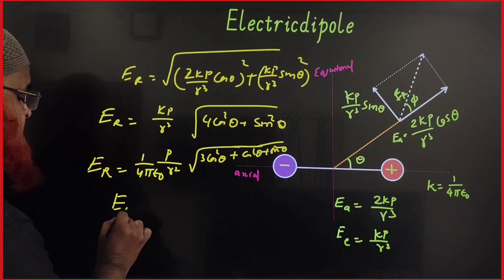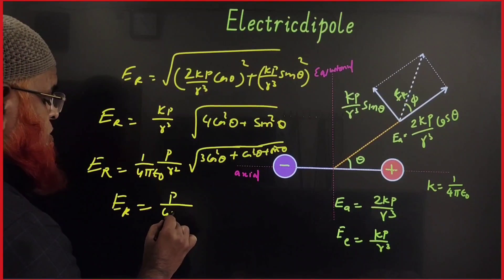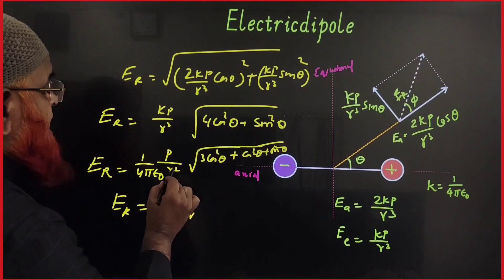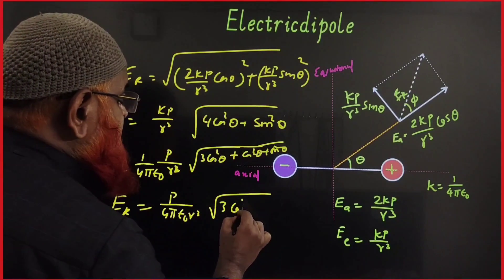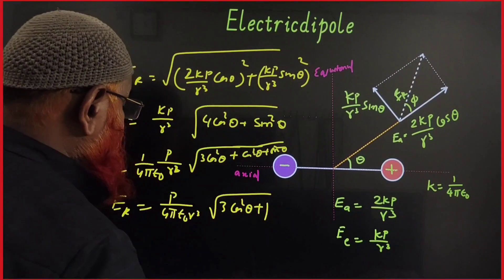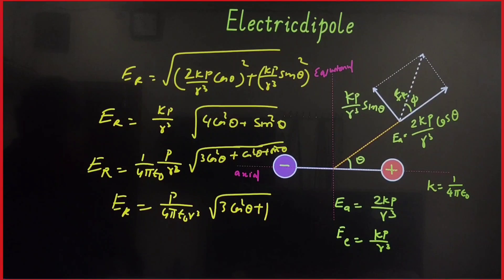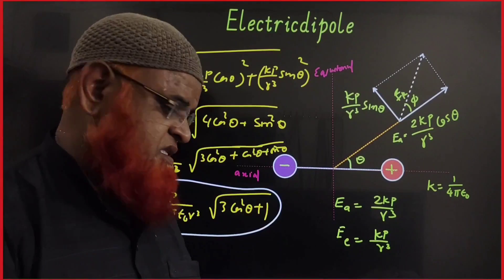Then what I am going to get? E resultant is going to be p by 4 pi epsilon naught into r cube divided by r cube. So this is going to be square root of 3 cos square theta plus 1. Okay. So this is going to be our final derivation. There is one problem based on this. We can see this problem also.